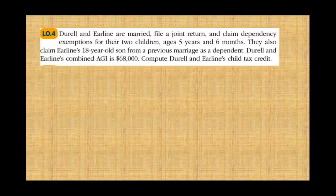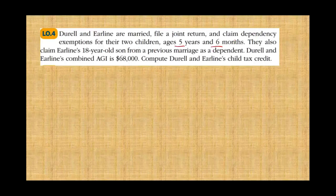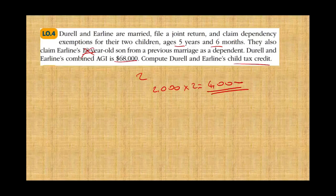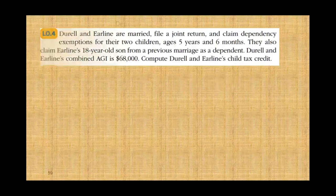Let's take a look at an example. D and E are married filing a joint return and claim a dependency exemption for their two children, ages 5 and 6 — both below age 17. They also claim Erlene from a previous marriage as a dependent. D and E's combined AGI is $68,000. What's their child tax credit? Simple: they have two kids, each gets $2,000, so $2,000 times two equals $4,000.